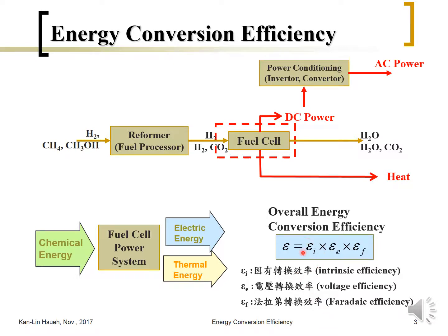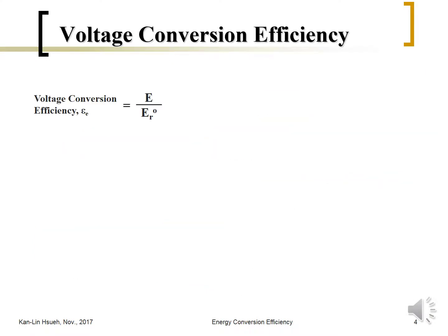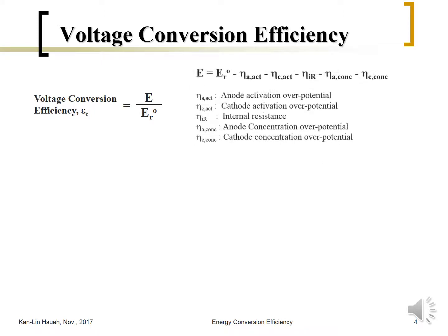The intrinsic efficiency comes from thermodynamics and can be calculated from the free energy change ΔG versus the enthalpy change ΔH for the fuel cell chemical reaction. For the voltage conversion efficiency, we are talking about the actual fuel cell output voltage versus the ideal voltage it is supposed to be.